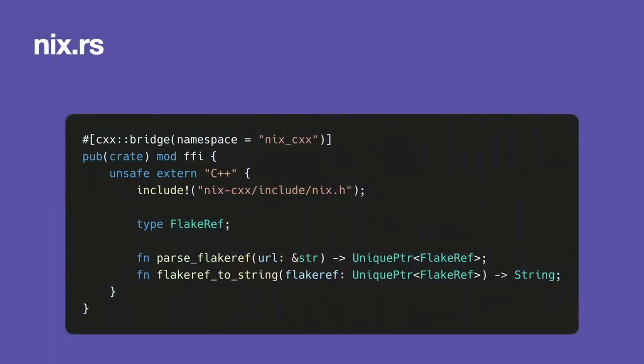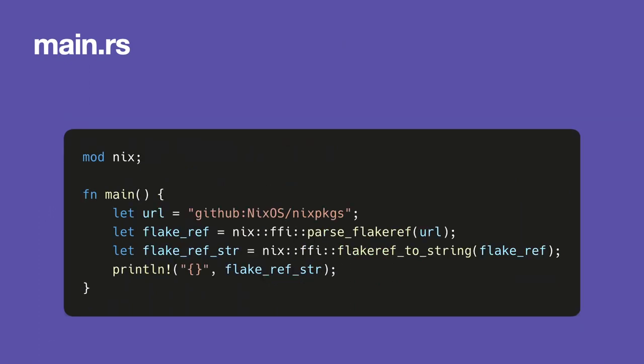On the Rust side, you need one module with a macro applied that tells you what you're bringing in from C++. Not a big deal. And the main function here is also not that big a deal — I parse the flake ref, turn it into a string, and print it. So after all this song and dance, we finally did it: we round-tripped a string. Yay.